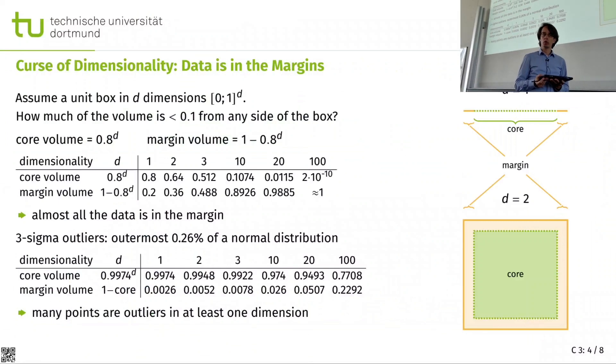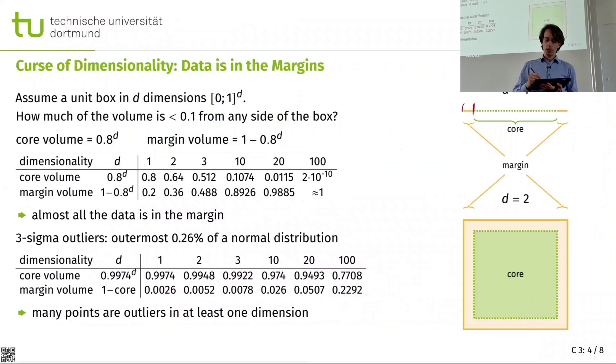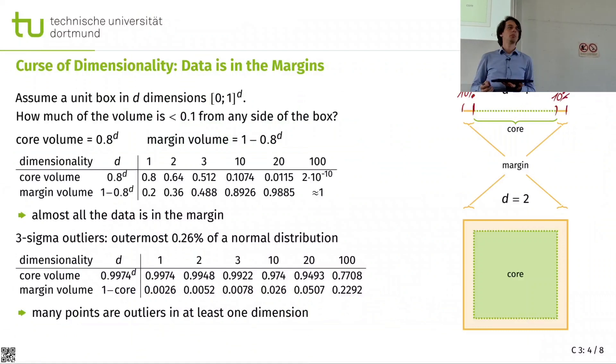And I mentioned already the data tends to lie in the margins. And we can, again, try to model this and kind of prove that this observation is not just intuition or whatever, but it is provable if I'm looking at very simple processes. So I'm using one dimensional data and I'm looking at the smallest 10% and the largest 10% of values. And then that's what I call the margin for now. And that means 20% of my data is in this margin. And 80% of my data is normal, is in the core.